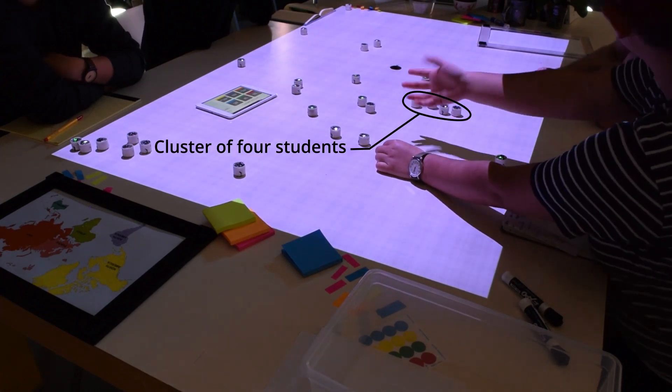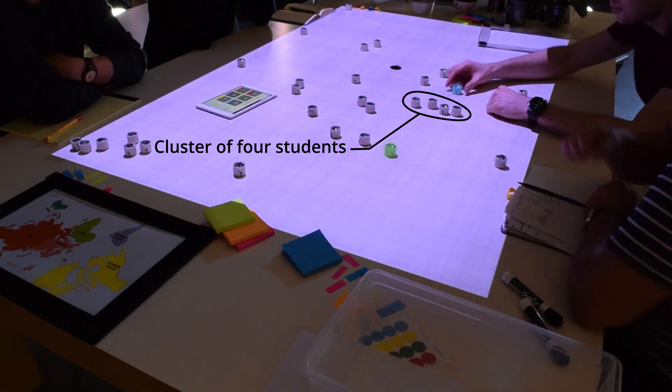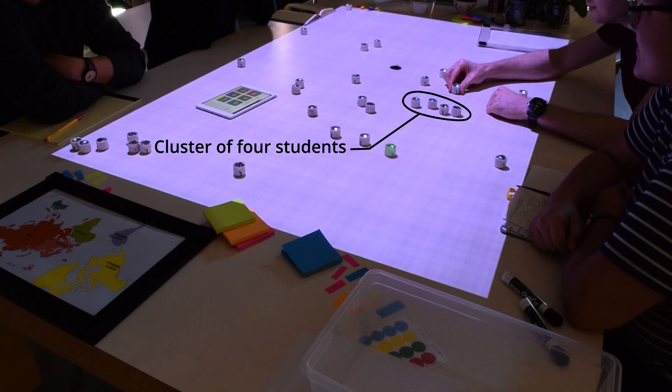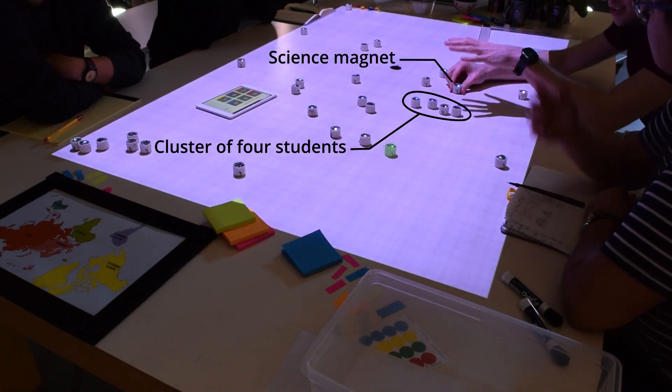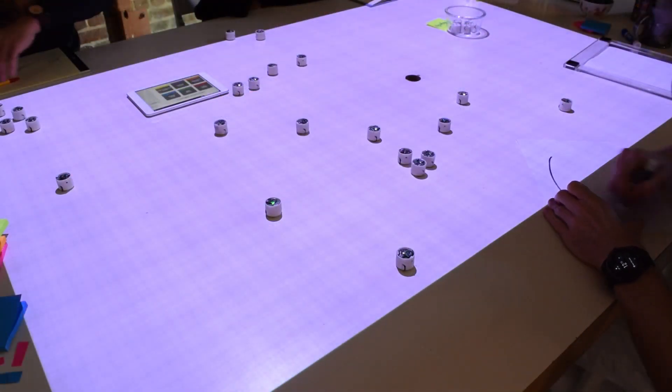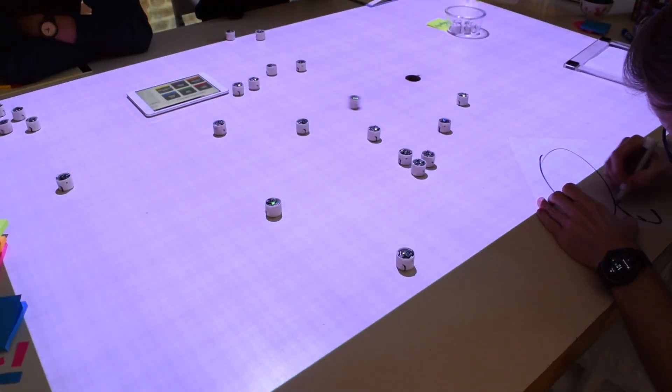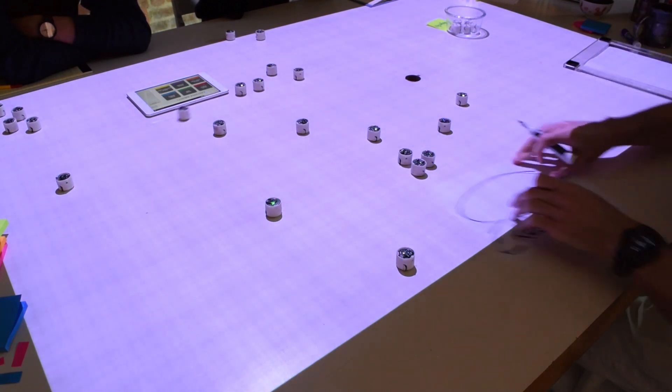The science professor touches the magnet associated with math to illuminate the students with a shade of green corresponding to their grade in math. Then another professor does the same with the science magnet in blue. They agree that four students are excellent both in math and in science, so one of them draws an area and puts these four excellent Zoids in it.